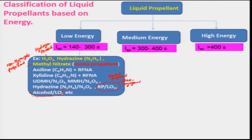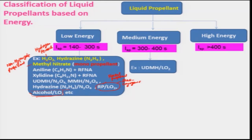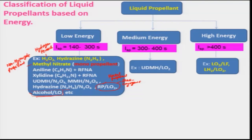An example of medium energy liquid propellant is UDMH and LO2; again, when you use liquid oxygen it is a semi-cryogenic kind of thing. The high energy propellant is liquid oxygen and liquid fluorine — keep in mind that this can give the highest specific impulse, on the order of 465 seconds.